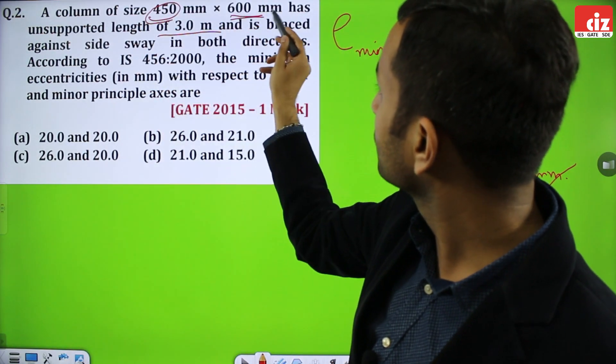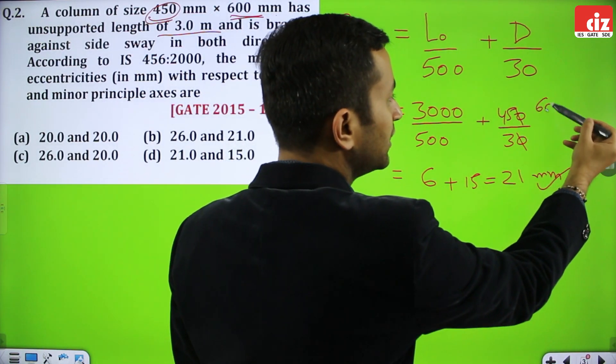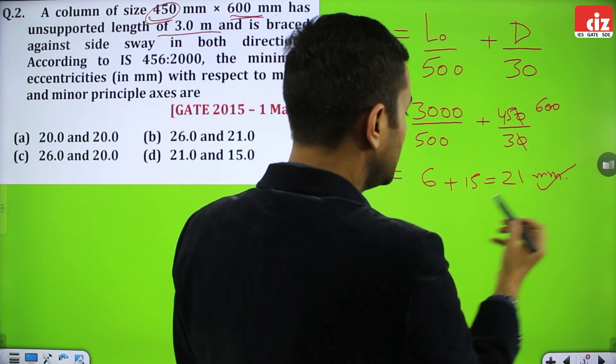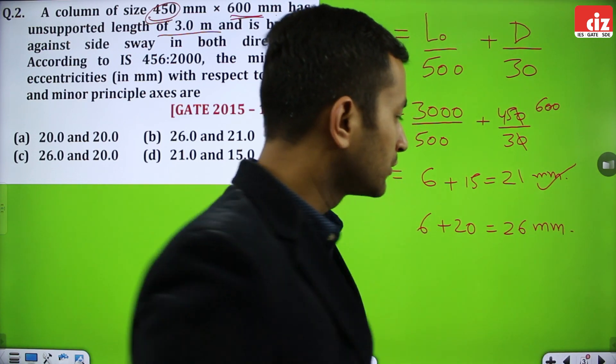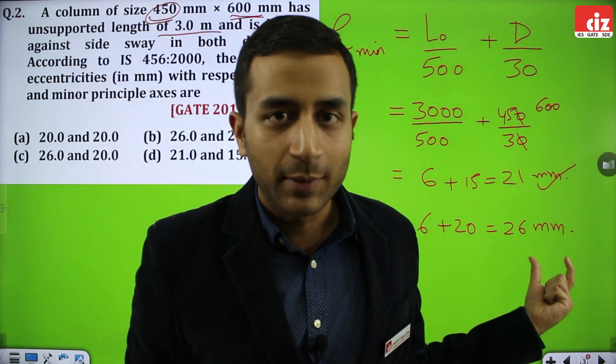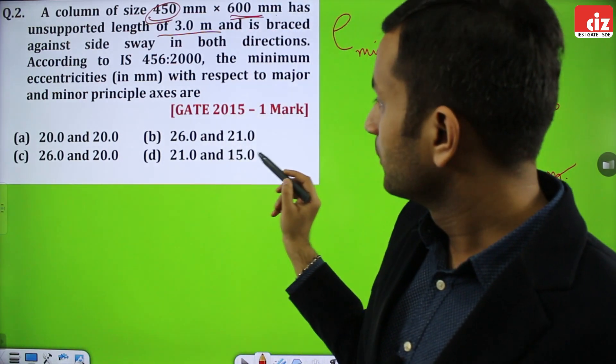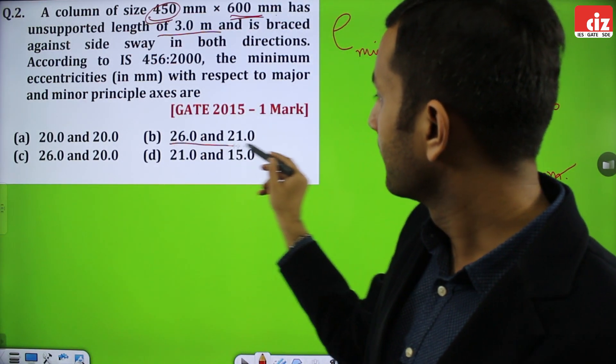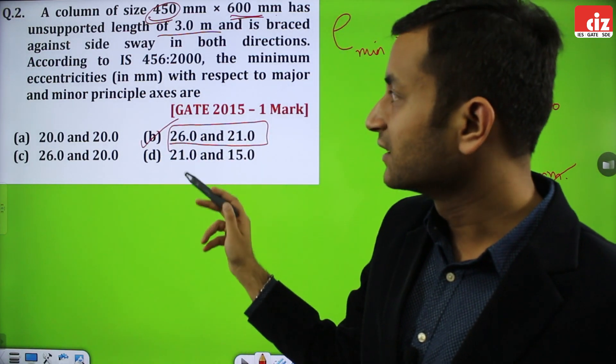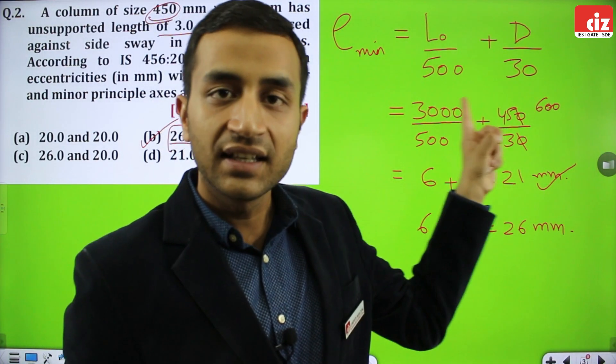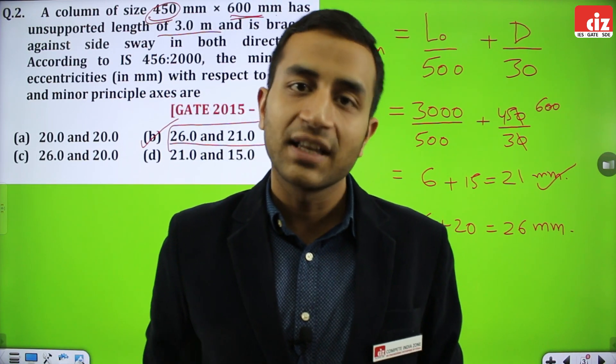One thing you have to note here: E minimum as per IS 456-2000 has to be 20 mm. Since it is greater than 20 mm, 21 is correct. 21 mm is corresponding to 450 mm. When I see 600 corresponding here, 600 divided by 30 means 20, so 6 plus 20 will give you 26 mm. Again this is more than 20 mm, so this is also correct. 21 and 26 is the answer. This option is correct, option number B: 26 and 21 mm.